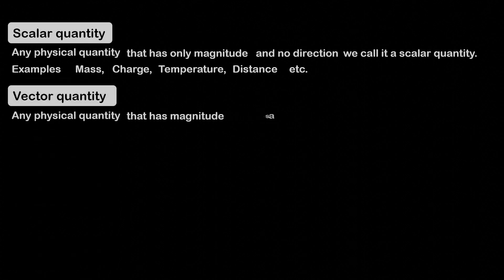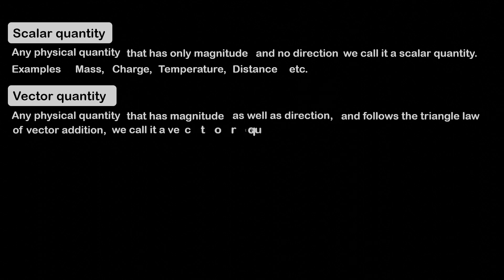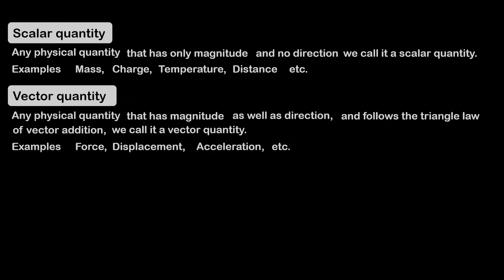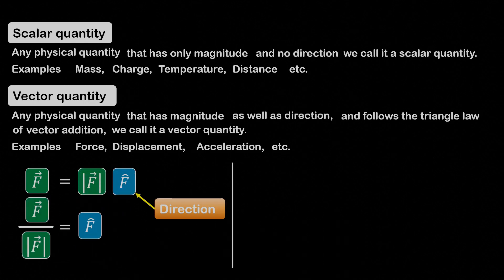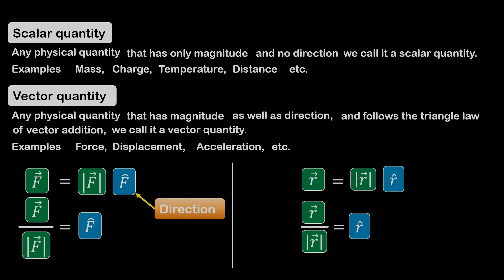Second, vector quantity — any physical quantity that has magnitude as well as direction, and follows the triangle law of vector addition, we call it a vector quantity. Examples include force, displacement, acceleration, etc. So if we want to represent a vector quantity like force in equation form, we write force equals the magnitude of force into the unit vector F-cap, which indicates the direction of force. We can also write it in different ways. Similarly, if we have a vector quantity like displacement vector r, we can represent it in similar ways.